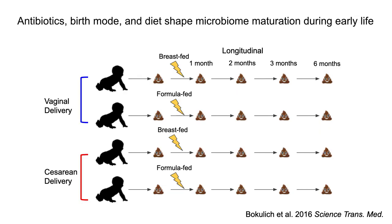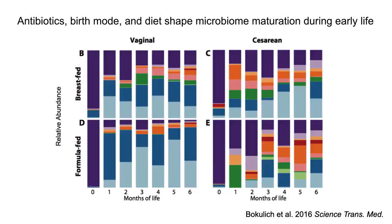They found that phylogenetic diversity and bacterial richness growth rates were significantly decreased in formula-fed children during 12 to 24 months of life. Formula feeding also altered beta diversity and decreased microbiota maturation during 12 to 24 months of life. The impact of cesarean delivery can also be seen in both diet types. This study demonstrates the plasticity of the infant gut microbiome and the importance of longitudinal study design.